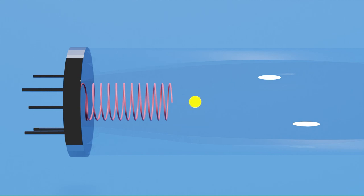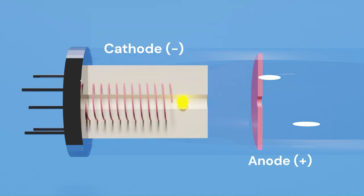To prevent this from happening, we can add a positively charged cylinder in front of the filament. Now all of the electrons simply get absorbed by the cylinder, so let's add a hole to allow some electrons to pass in a straight line.